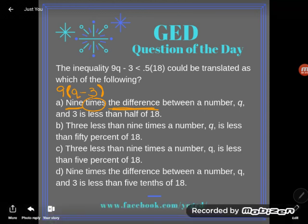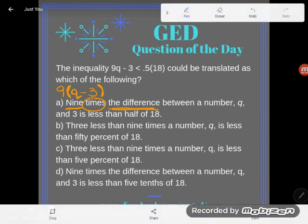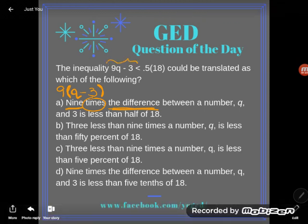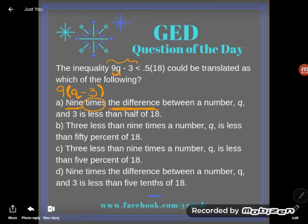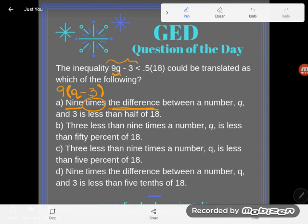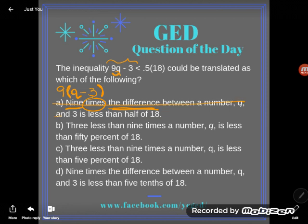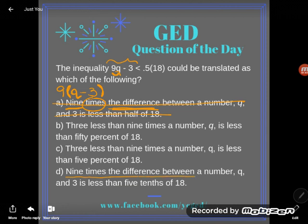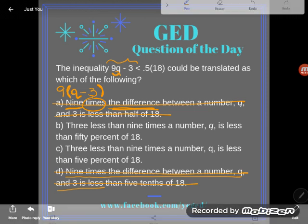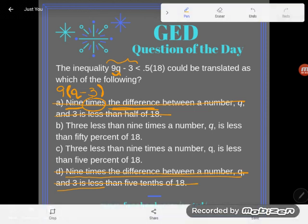Notice the parentheses. Now take a look at my inequality here—without parentheses, that is not nine times the difference between q and three. This is just nine times q, and once you're finished multiplying, then you would subtract three. So definitely (a) is wrong. Same thing with (d)—I see that same phrase 'nine times the difference between a number q and three.' No, not the same as 9q - 3. So I'm going to rule out those two.